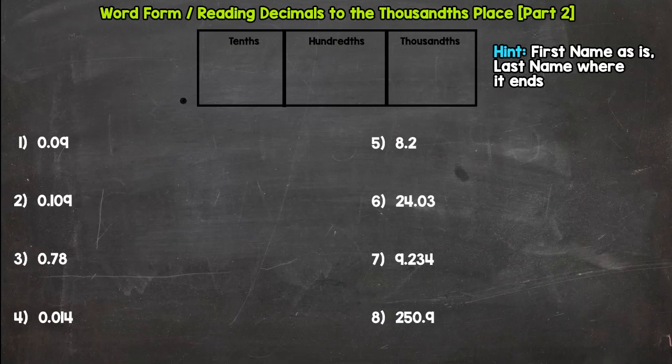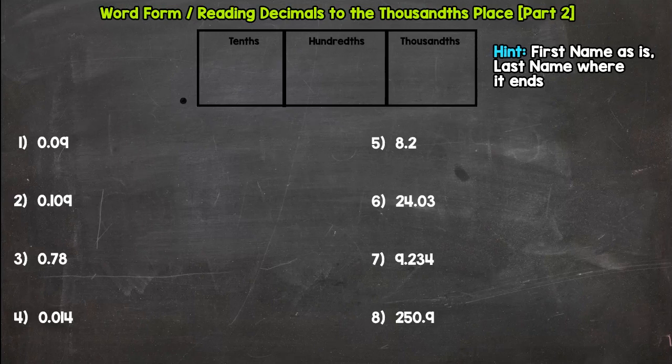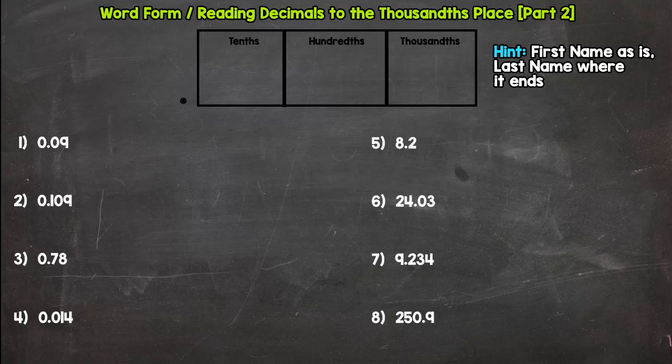All right, welcome to part two of word form and reading decimals to the thousandths place. So we're going to do eight more here to hopefully get this down so we are very confident with reading and writing decimals to the thousandths. And hopefully you checked out part one. If you didn't check out part one, check out part one first and then come here to part two.